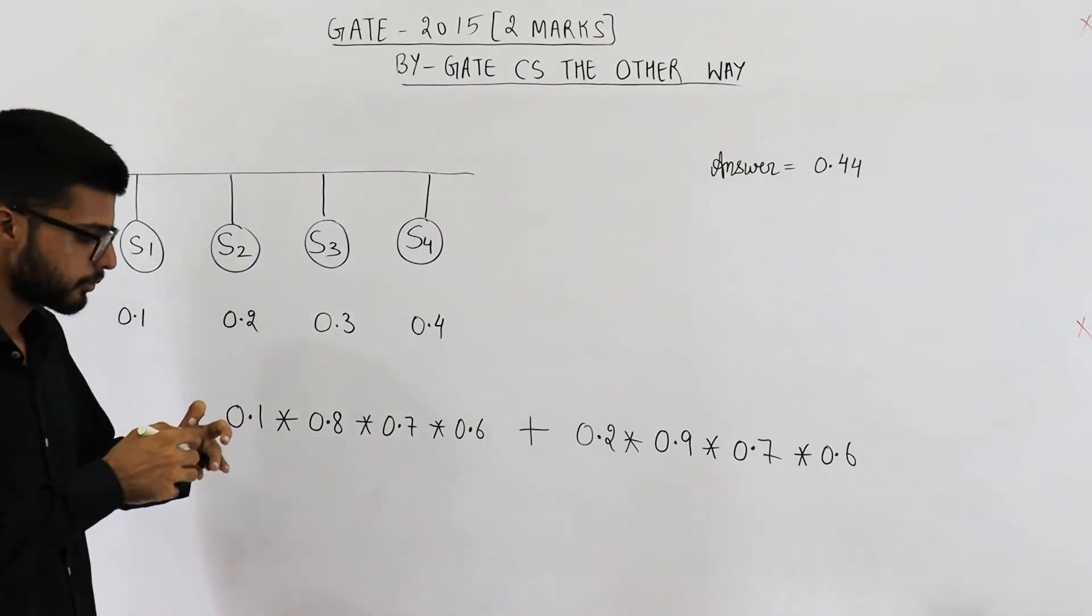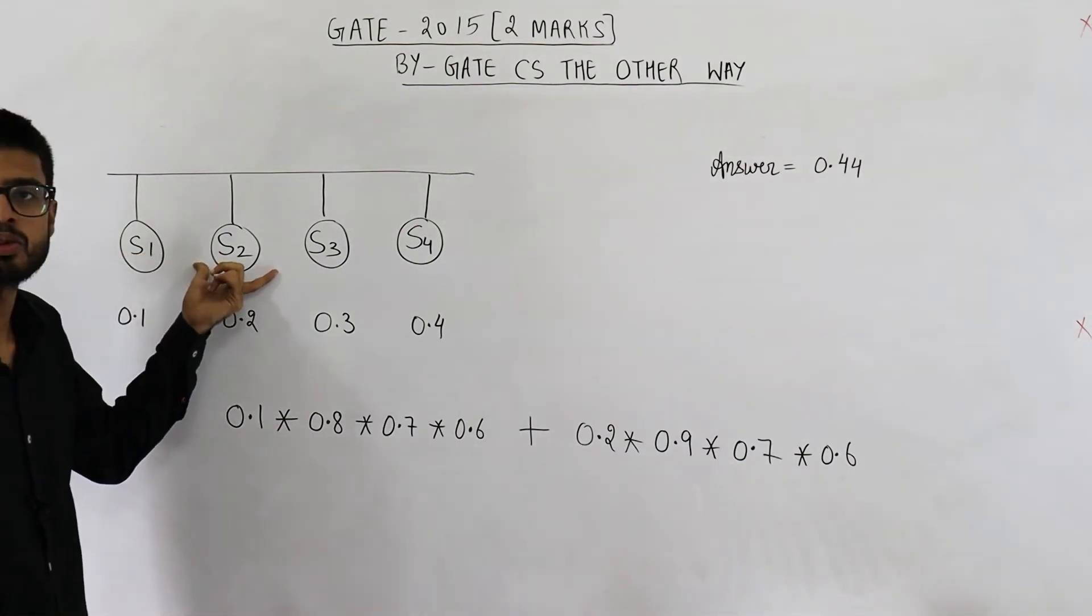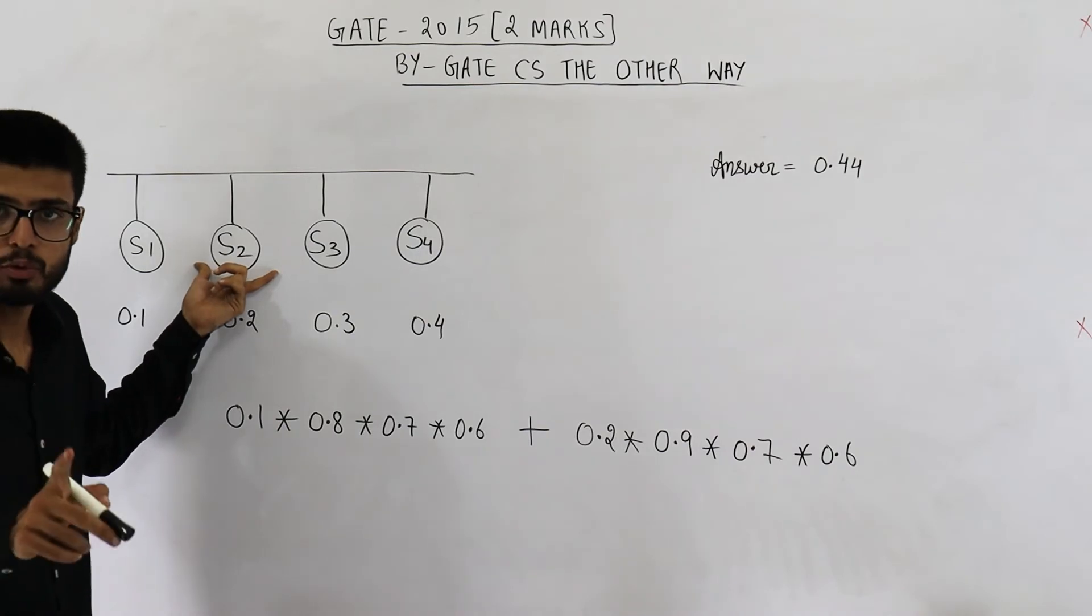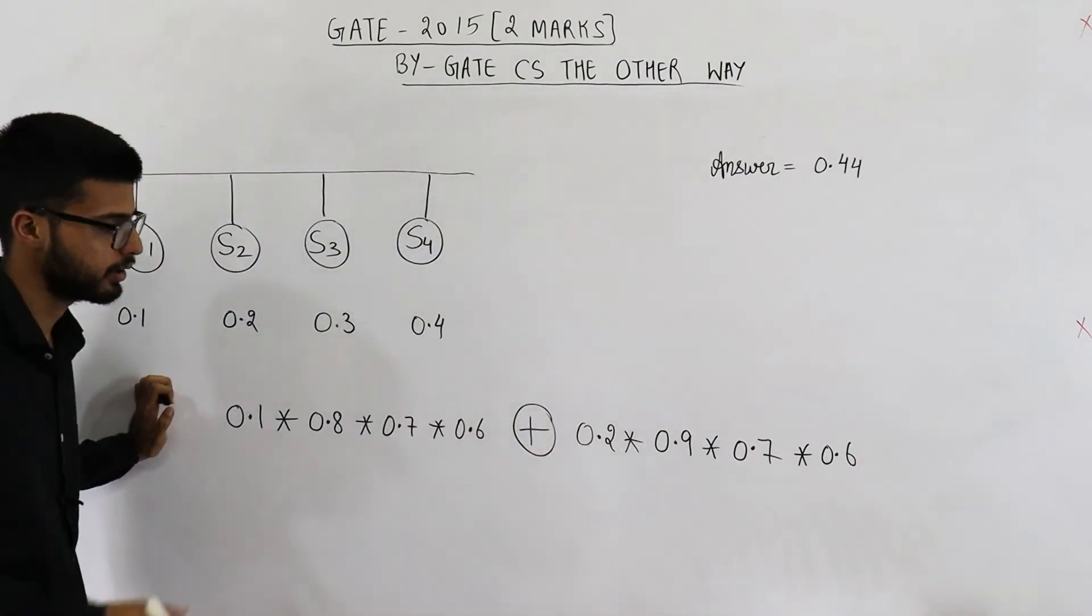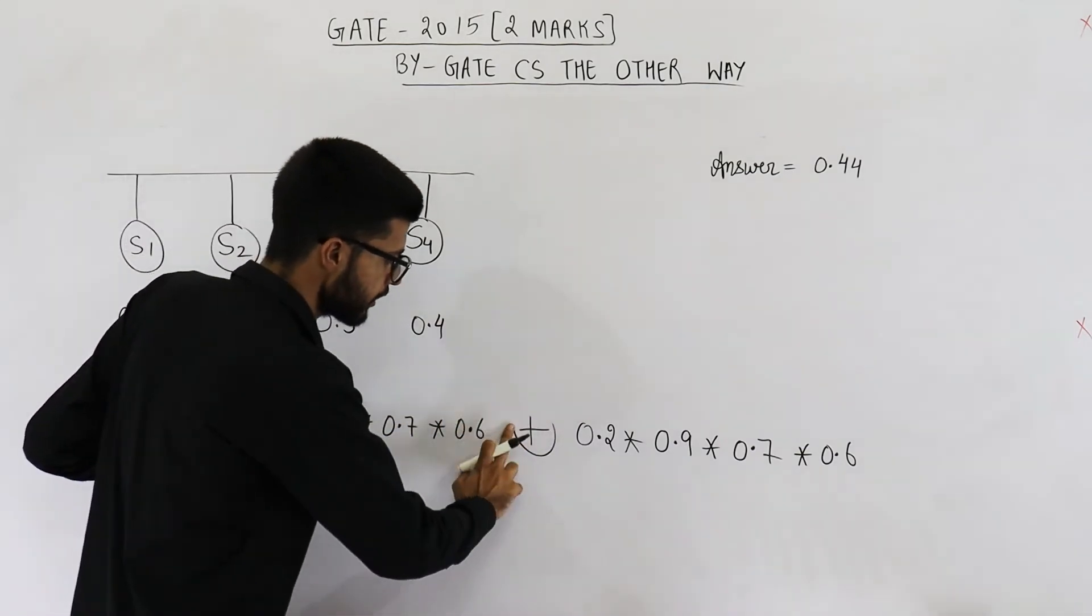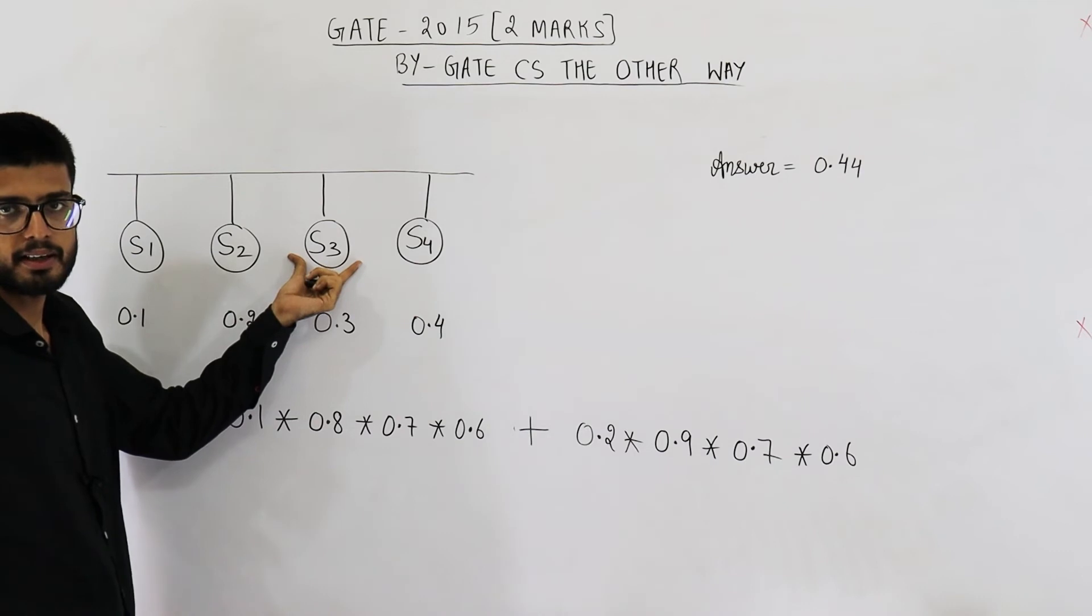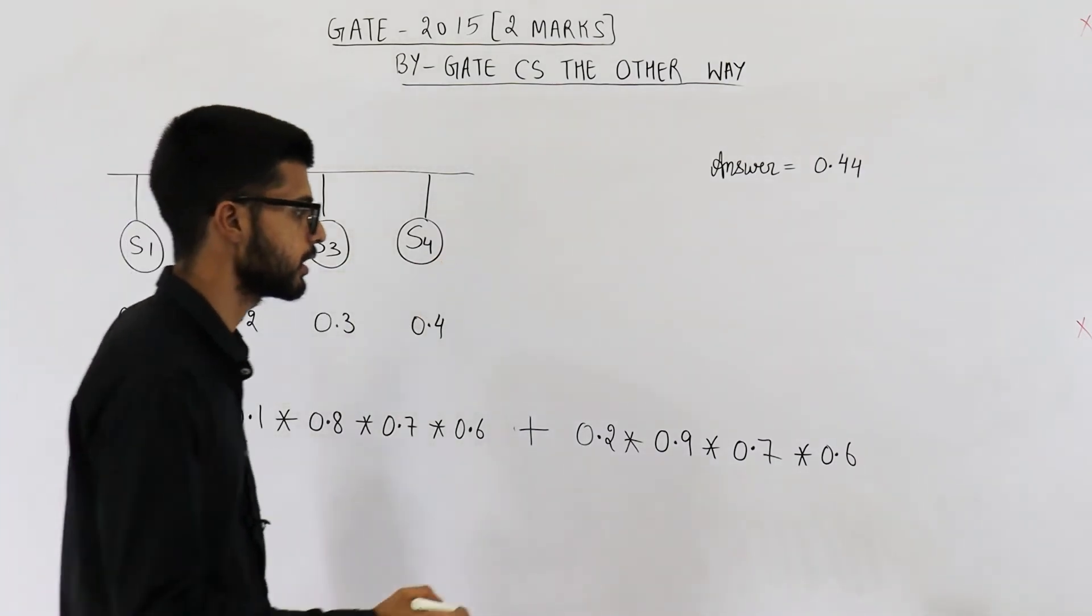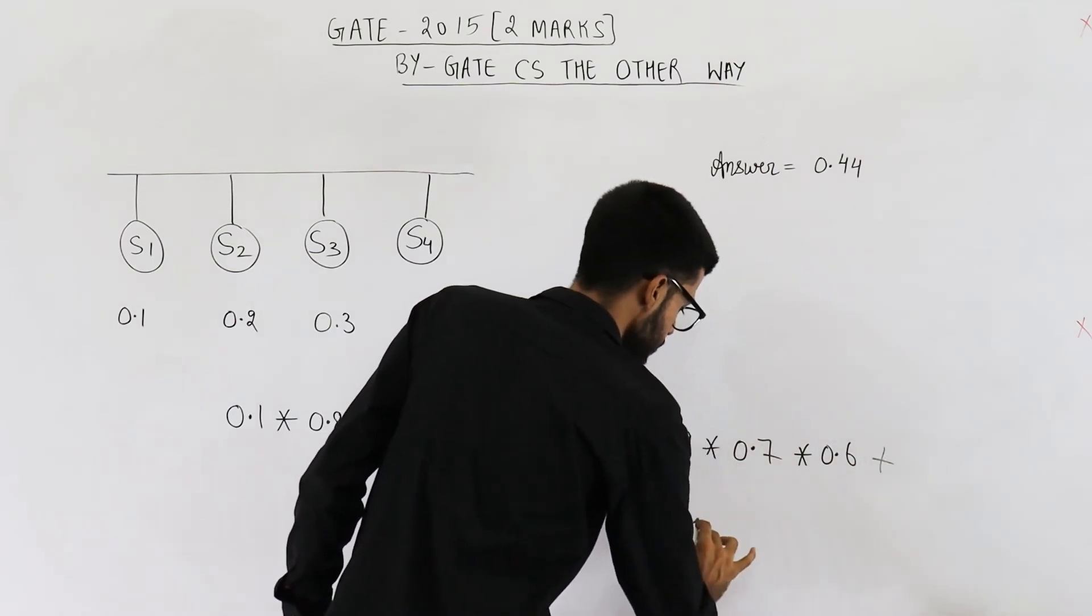See first method is only S1 is sending data or second method is only S2 is sending data. I am using OR, so that is the reason there is a plus between these two. Similarly, other method is only S3 is sending data or only S4 is sending data. So there will be a plus between all of these four cases.